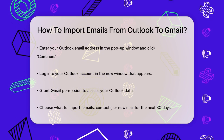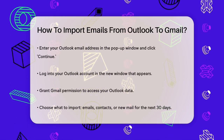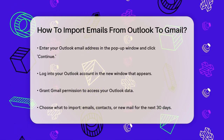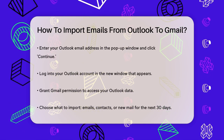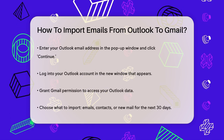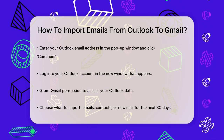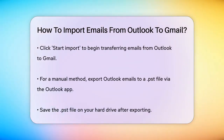If you prefer a more manual approach, you can use the Outlook desktop app. Start by exporting your Outlook emails to a PST file. To do this, go to File, Open & Export, Import/Export, Export to a File. Save the .pst file on your hard drive.